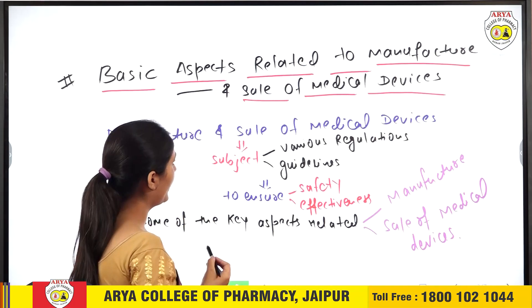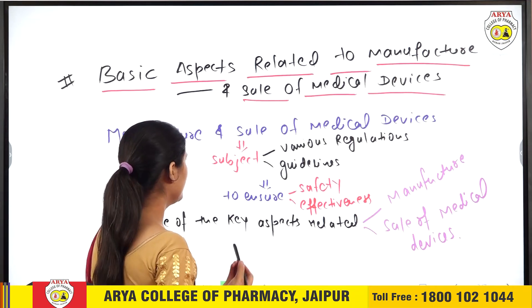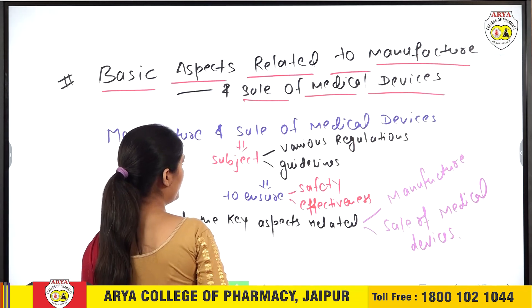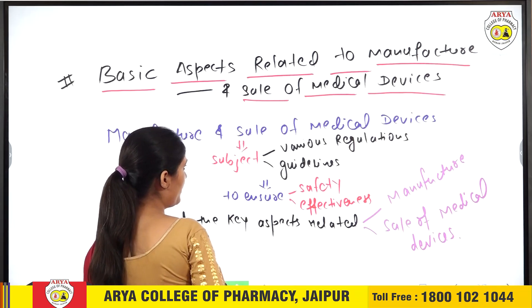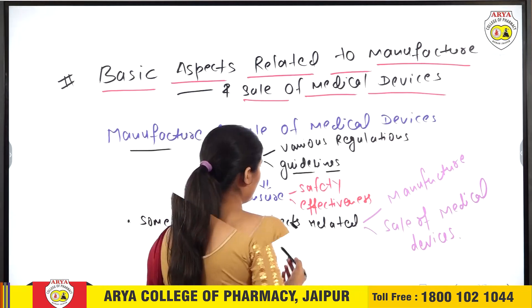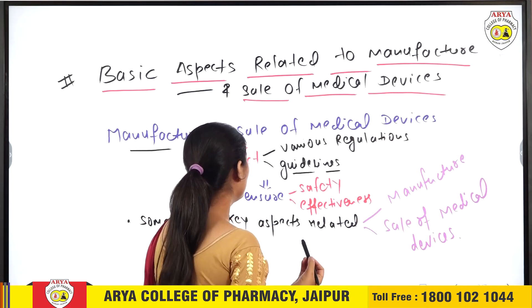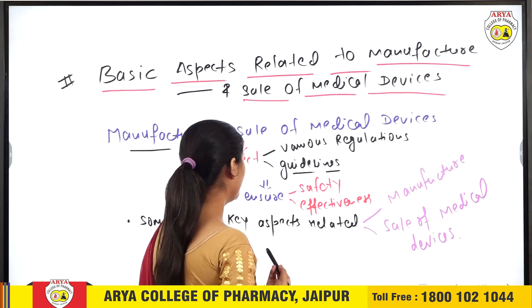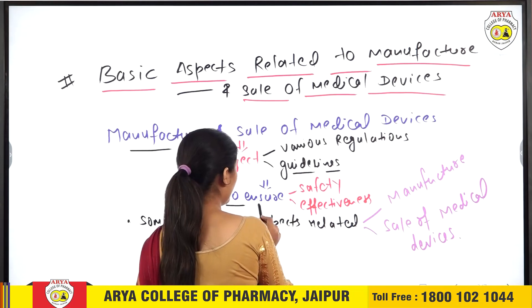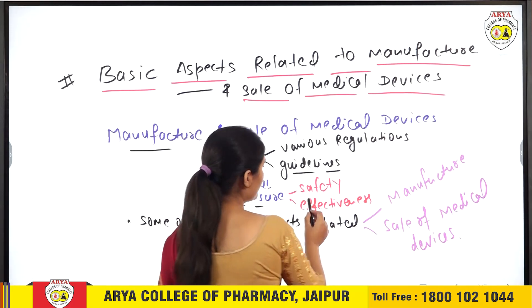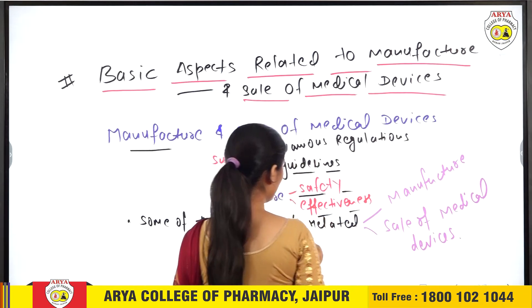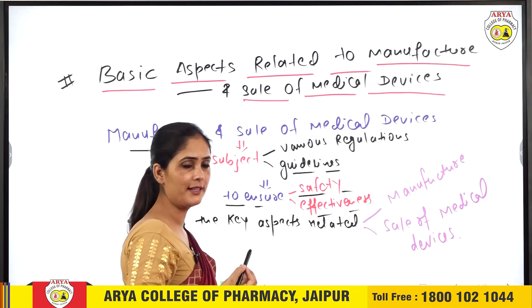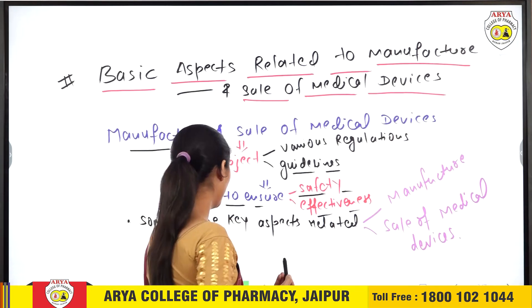Like manufacturer and sale of medical devices — any person who is selling or manufacturing any medical device must first look at the regulations and guidelines. These regulations and guidelines ensure safety and effectiveness of the medical device.